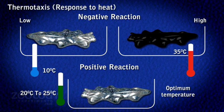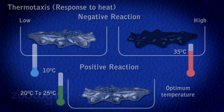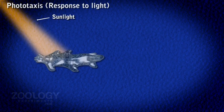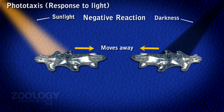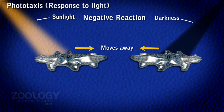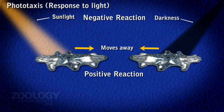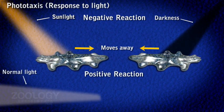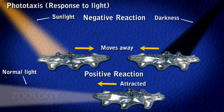Phototaxis: Amoeba avoids both direct sunlight and total darkness. It responds positively to normal and weak light.